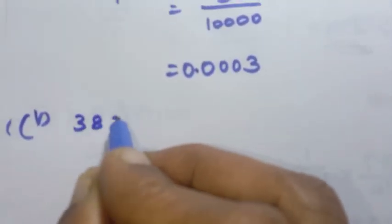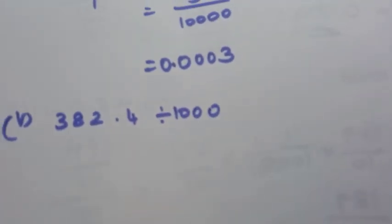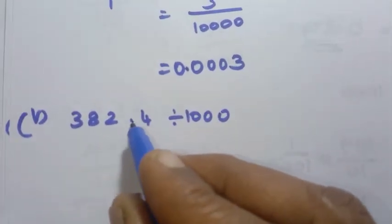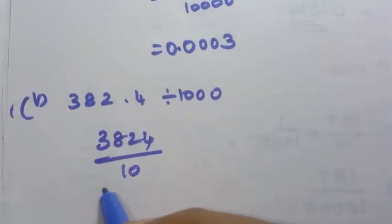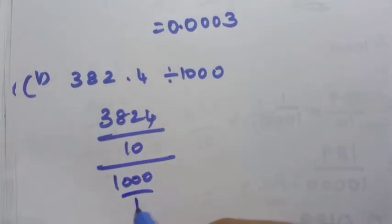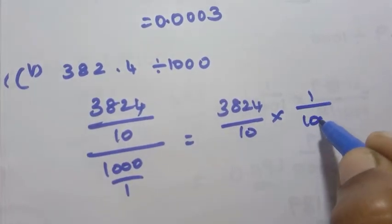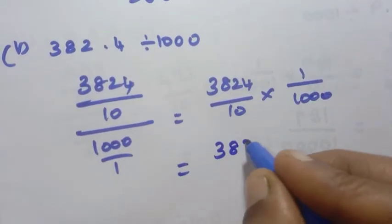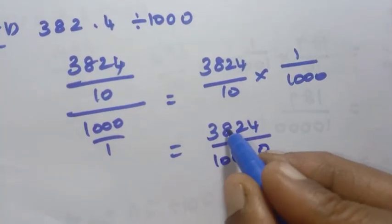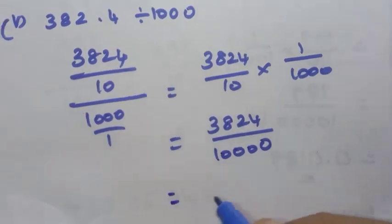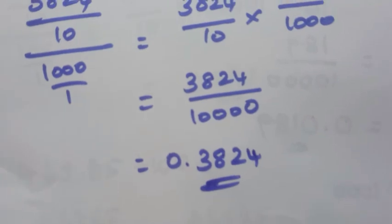Fifth sum: 382.4 divided by 1000. 382.4 has 1 decimal place, so the number is 3824 by 10. Divided by 1000, that is 3824 by 10 into 1 by 1000, giving 3824 by 10000 — 4 zeros. Placing the point before 4 zeros: 0.3824. This is the answer for the fifth question.